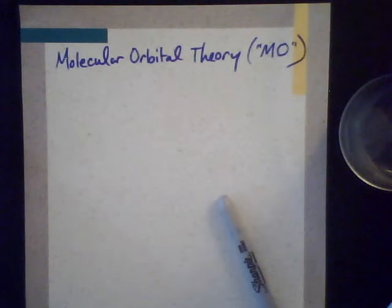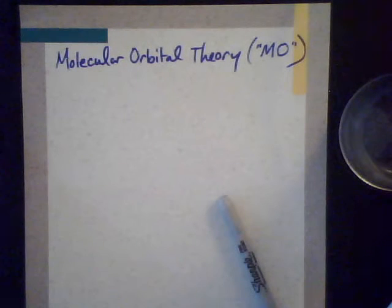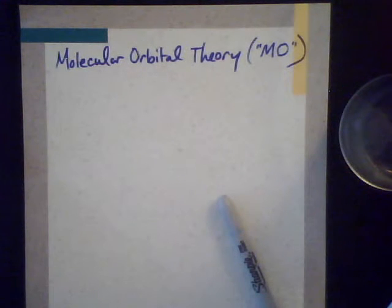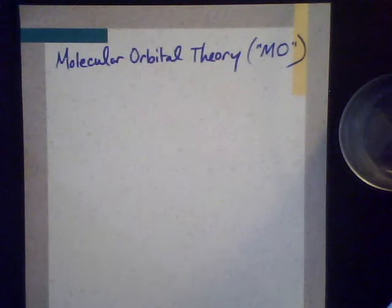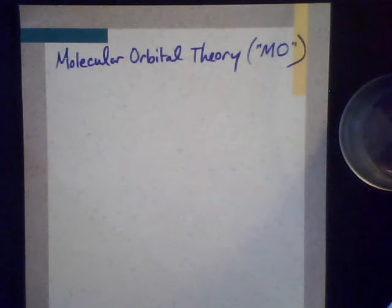I want to talk about the second type of bonding theory for covalent bonds. The first was valence bond theory, and now we're going to talk about MO, or molecular orbital theory, which has a similar idea as valence bond theory because we're still talking about overlapping orbitals causing this shared pair of electrons, but it also helps to explain other characteristics about these particular compounds.